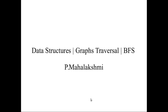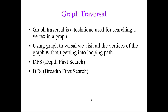Now we will see the graph traversal method and the types of traversal. Graph traversal is a technique used for searching a vertex in the graph or visiting every node in the graph. Using this traversal, we will visit all the vertices of the graph without getting into a loop path. There are two types: one is depth first search, and another one is breadth first search.